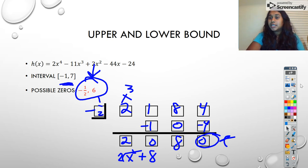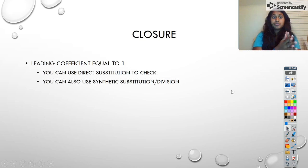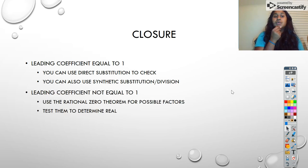And just our closure piece real quick, just to kind of wrap up. Just remember we talked about leading coefficients equal to 1. You can use direct substitution. That means plug in your factors. You can also use synthetic substitution, which is our division. And where do those factors come from? Those come from the constant term, technically the x to the 0th term. The other thing we talked about was leading coefficients not equal to 1.